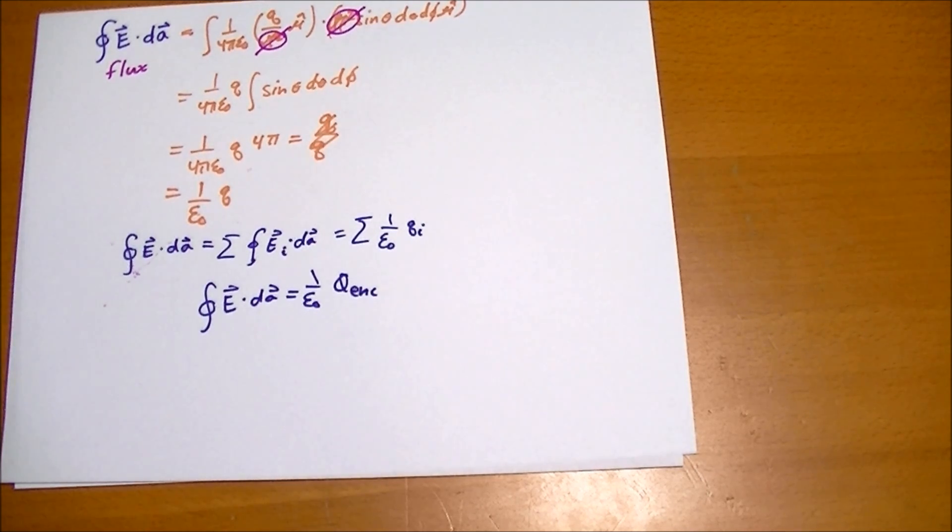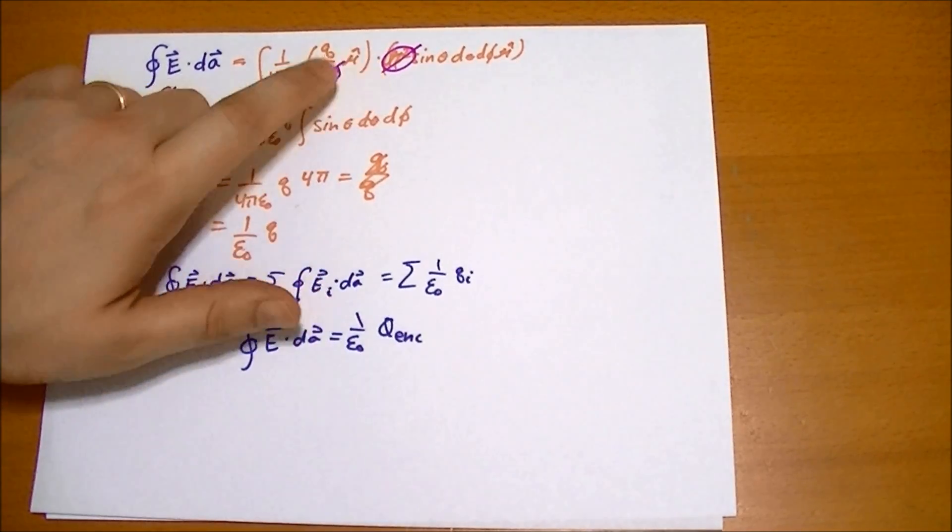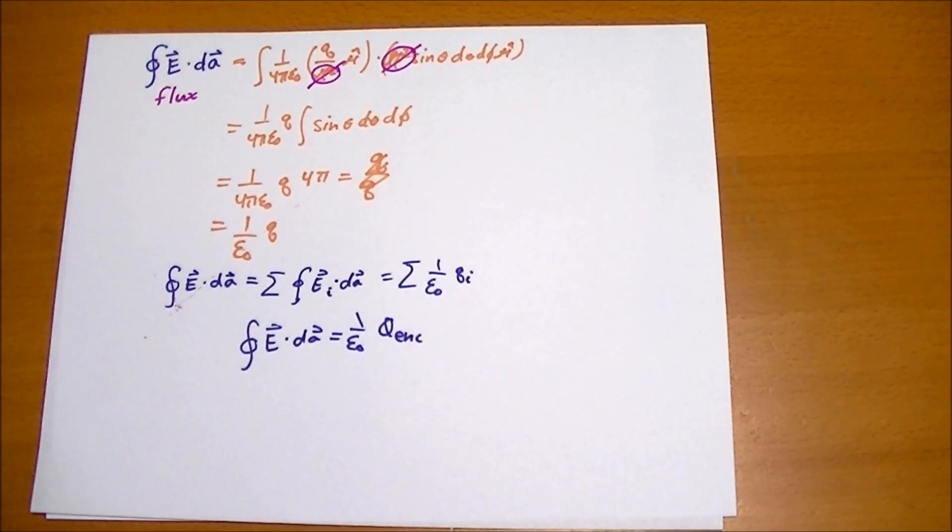It doesn't contain any new information beyond what we already knew about Coulomb's law. It's really based on Coulomb's law. And the only reason it works is because of the r-squared nature of Coulomb's law. If we didn't have that r-squared cancelling out the r-squared of the sphere that we were integrating against, then we wouldn't have anything at all.